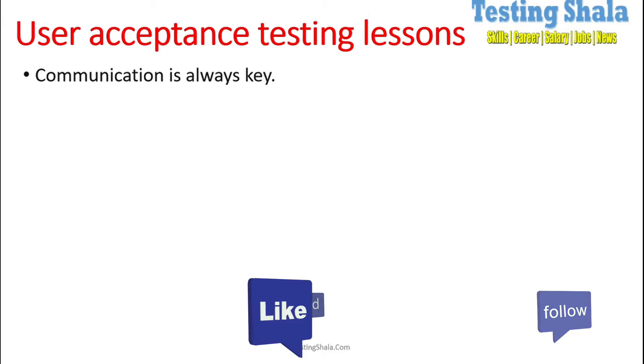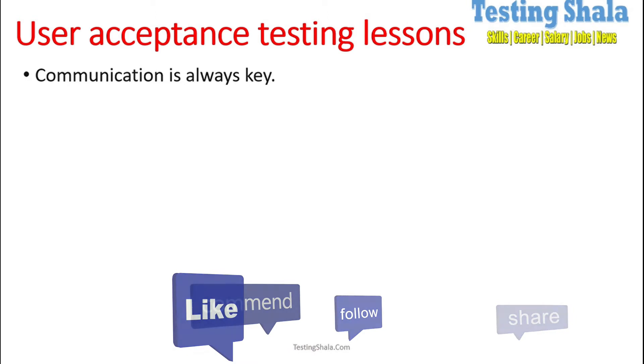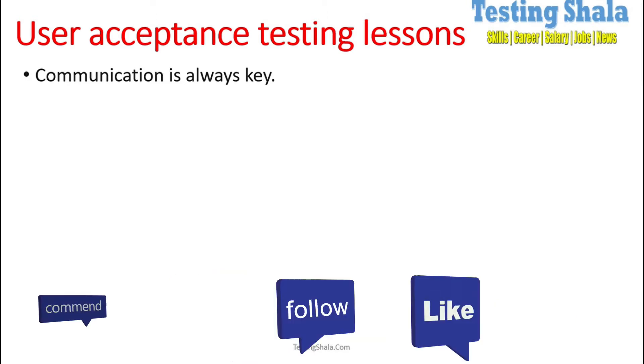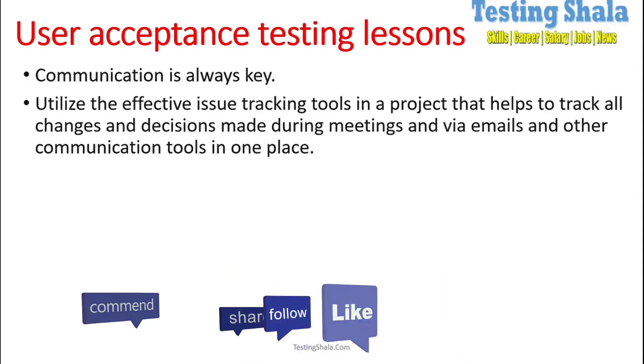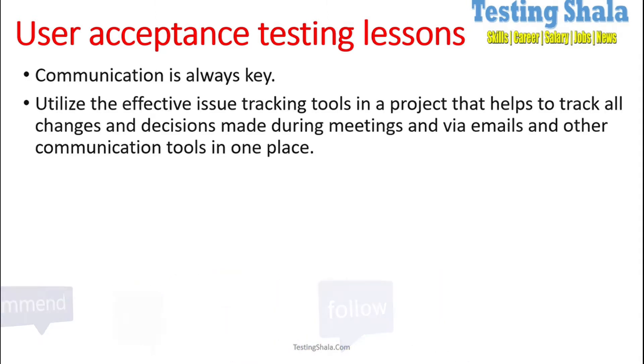If something is not there, your UAT will be a complete disaster. The second thing is you should use the right tools — it could be your test management tools, test execution tools, or defect tracking tools.